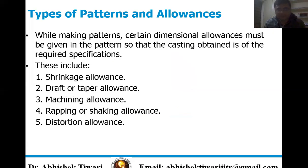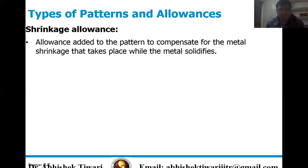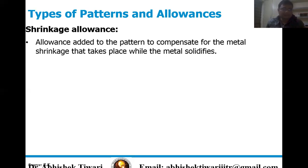While making a pattern, certain dimensional allowances must be given so that the casting obtained is of required specifications. These include shrinkage allowance, draft or taper allowance, machining allowance, rapping or shaking allowance, and distortion allowance. Shrinkage allowance is added to the pattern to compensate for metal contraction that takes place while the metal solidifies. All metals except bismuth and gallium solidify with contraction; contraction of metals and alloys is always volumetric, but contraction allowances are always expressed in linear dimensions.